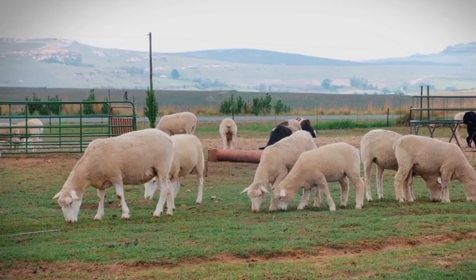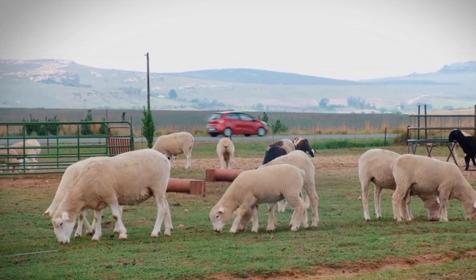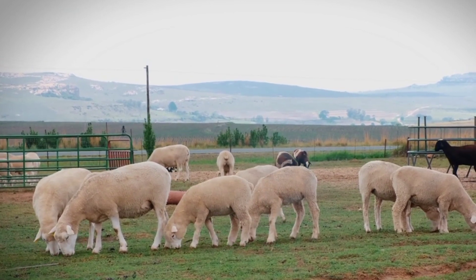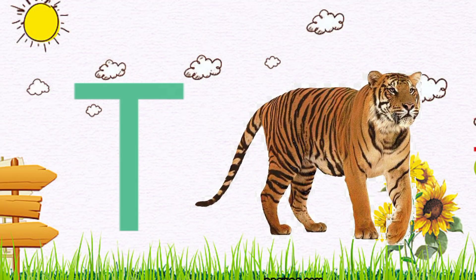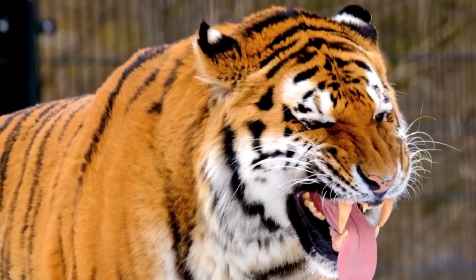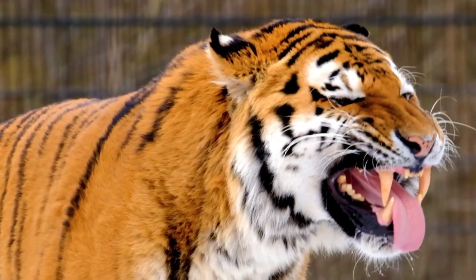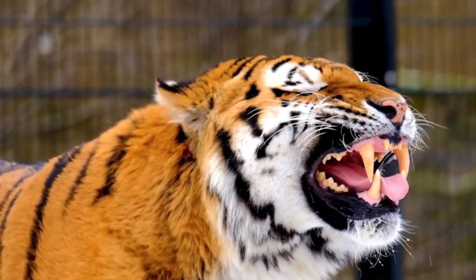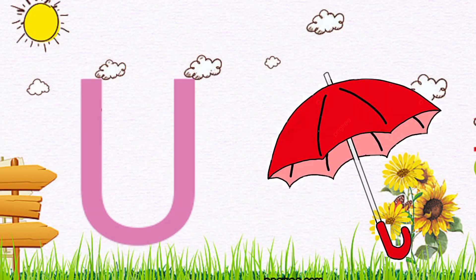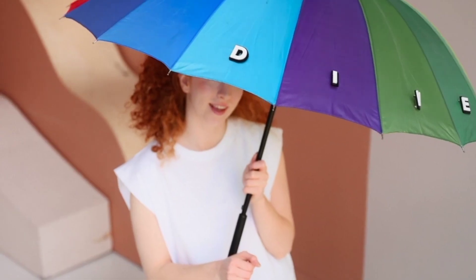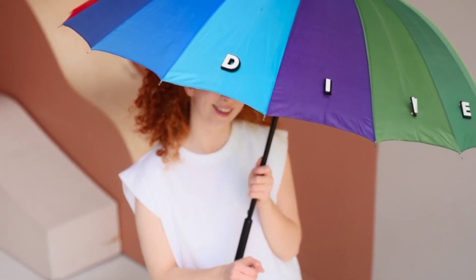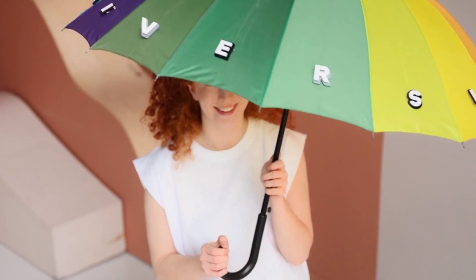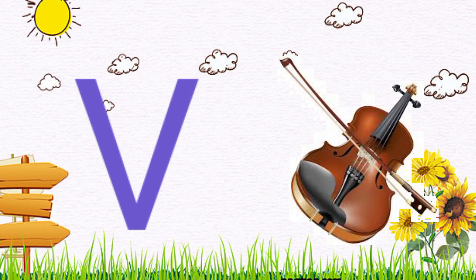Now I know my ABCs. Next time won't you sing with me. T for tiger. U for umbrella.